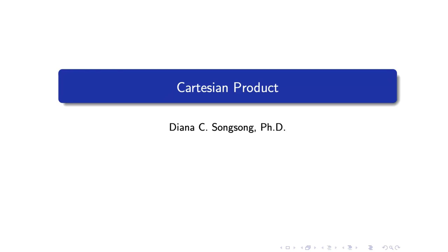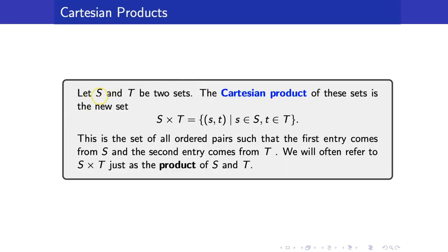In this lesson, we are going to discuss Cartesian products. Suppose that we have two sets, S and T. The Cartesian product of these sets is the new set S cross T, and the elements are ordered pairs such that the first entry comes from S and the second entry comes from T. We will often refer to S cross T just as the product of S and T.